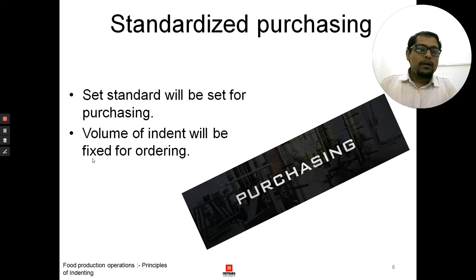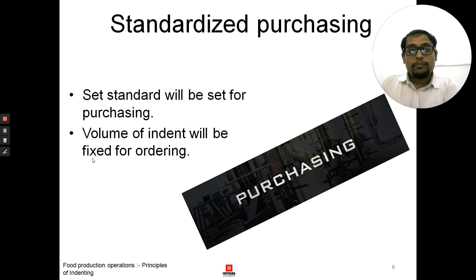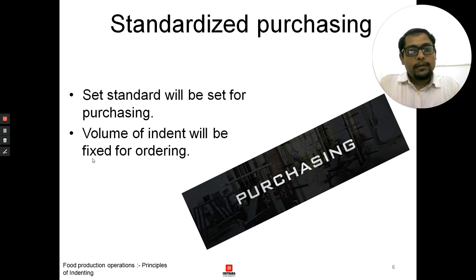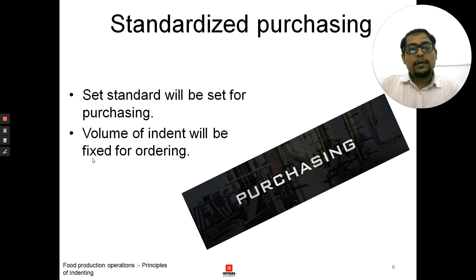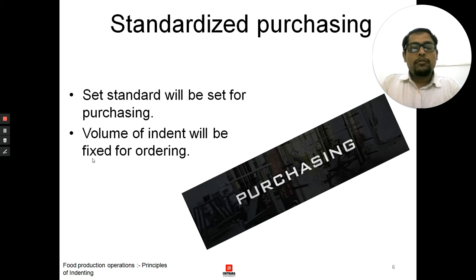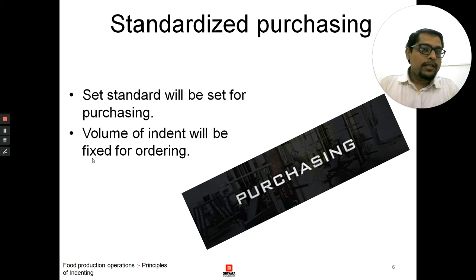For making gobi masala for a certain number of portions, we know what quantity of gobi is required, so we will know how much to indent for that particular number of people we have to serve. The volume of indent will be fixed. For example, if we are catering for 100 people, we already know how much food product is required because we have done yield testing and set the recipes. We multiply the recipe card — say it is written for 5 people — to scale up for 100 people, and we get the required amount of products. This makes the purchasing system standardized.